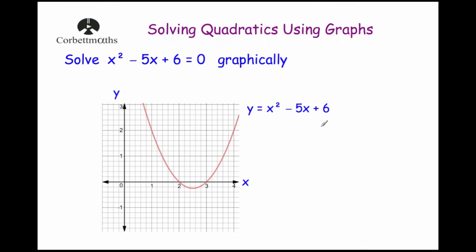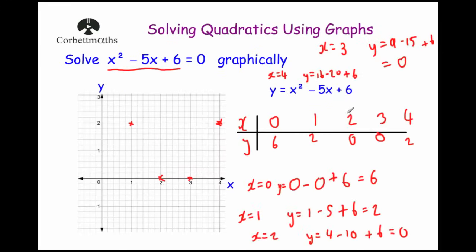We're trying to find when x squared minus 5x plus 6 equals 0. From our table we can see that happened on two occasions: when x was 2 and when x was 3. So our answers are x equals 2 and x equals 3.